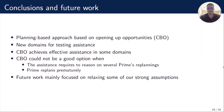To sum up, we have defined a planning-based approach based on opening opportunities for Prime to improve its plan. We have defined new domains for testing assistance. CBO achieves effective assistance in some domains, but it may not be a good option in two cases. The first is when the assistant requires multiple rounds of non-trivial replanning — remember that CBO only considers a single Prime plan before passing to phase two, which happens in Termes Assistance. The second case is when Prime replans prematurely, which happens in Teleport Assistance 2, but this is not necessarily always an issue — in Car System 1 and Car System 2, Supporter replans many times and assistance is still successful. Future work is mainly focused on relaxing some of our stronger assumptions. Thank you very much.